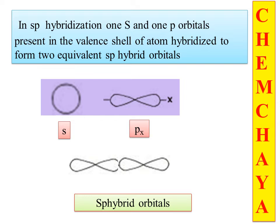The S orbital is spherical and the P orbital includes PX, PY, PZ, etc. These orbitals are of the same energy. When an S orbital and a PX orbital overlap, they form SP hybrid orbitals — linear hybrid orbitals oriented at 180 degrees to each other, with a shape that has two lobes. Two atomic orbitals combine to give two SP hybrid orbitals.